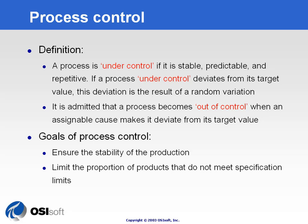If the process deviates from its target value, that would be the cause of random variation but it will still be under control. A process becomes out of control when it deviates from its target value due to assignable causes — some external forces being applied to the process. The outcome may look the same, but one is due to random variation and the other is due to assignable causes, and you want to identify the difference between the two.